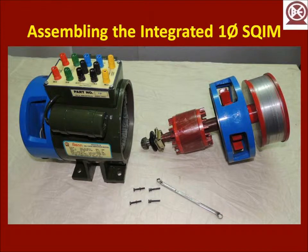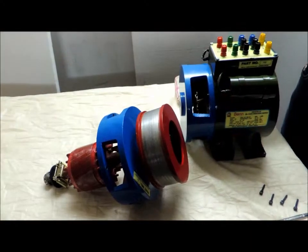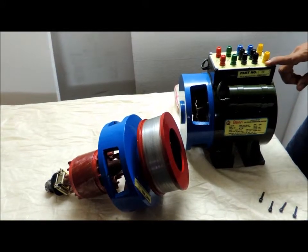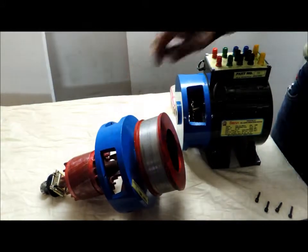We have a single-phase CSCR squirrel cage induction motor. This is part number four, which is a stator, and part number six, the die-cast rotor.